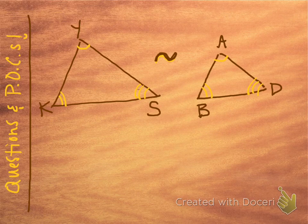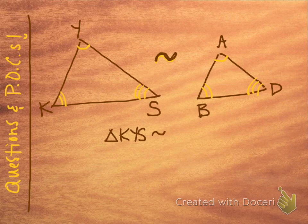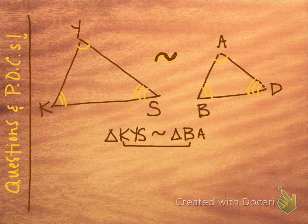The way we write a similarity statement, which is similar to a congruent statement, is to name one triangle. The one on the left we could call triangle KYS. We would say it's similar to triangle BAD, making sure that corresponding vertices line up, just like we would do when they were congruent. So K goes with B, Y goes with A, and S goes with D. This is an example of a similarity statement.